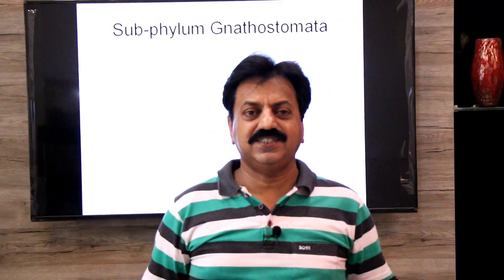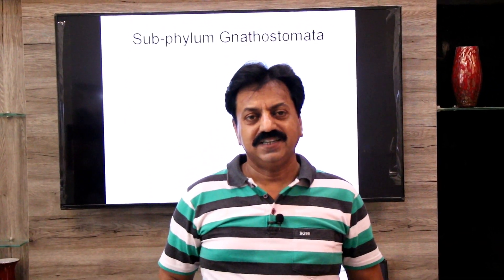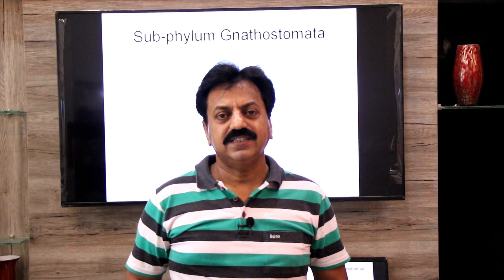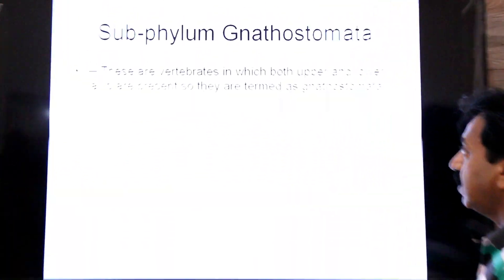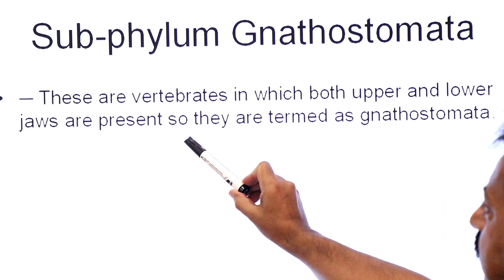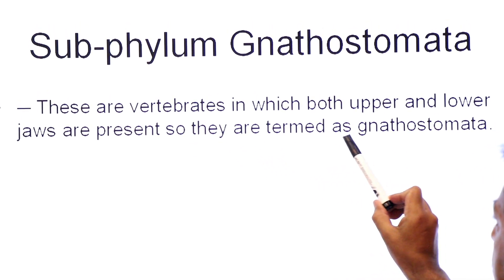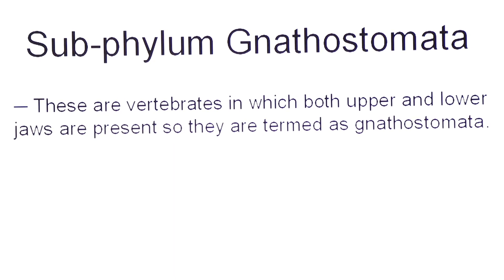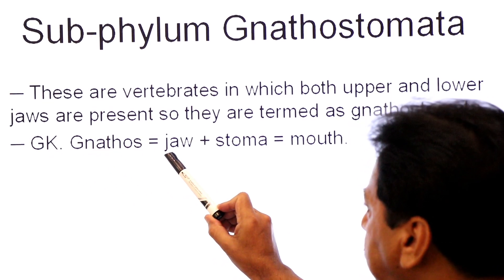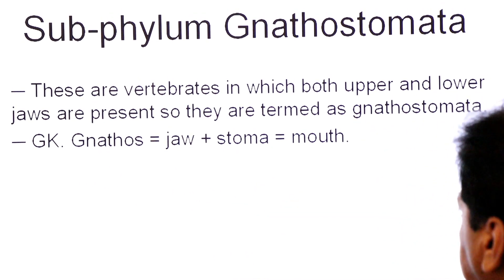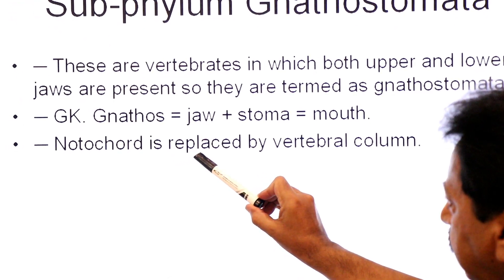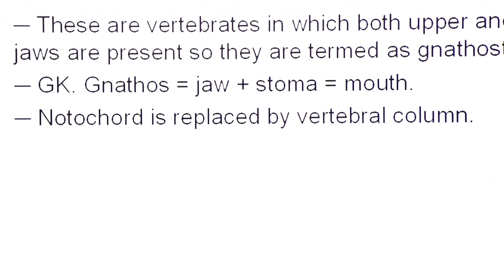Gnatos means jaws and stoma means mouth. These are the vertebrates having both upper and lower jaws in their mouth. So they are termed as Gnathostomata. The term Gnathostomata has Greek origin: gnatos means jaw plus stoma means mouth. Also, the notochord is replaced by a vertebral column, so they are Vertebrata.